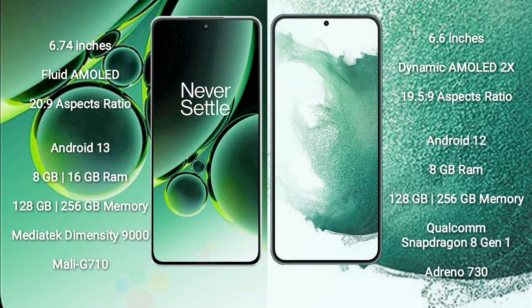OnePlus Nord 3 comes with 8GB or 16GB RAM and 128GB to 256GB internal storage, with a MediaTek Dimensity 9000 processor and Mali-G710 GPU. Samsung Galaxy S22+ comes with 8GB RAM and 128GB to 256GB internal storage, with a Qualcomm Snapdragon 8 Gen 1 processor and Adreno 730 GPU.